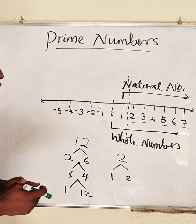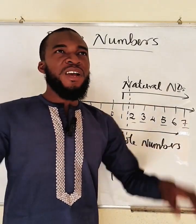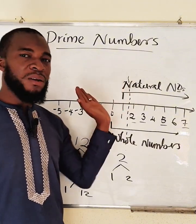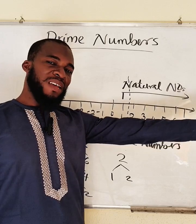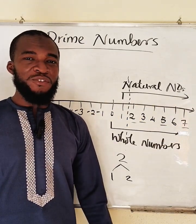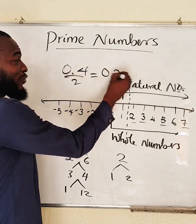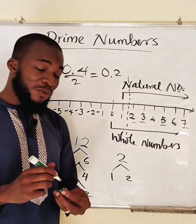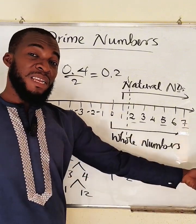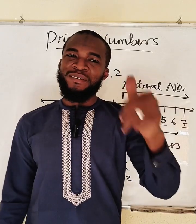I think I've explained what a prime number is. If you define it as 'any number' you are wrong; if you say it is an 'integer' you are wrong. It has to be a natural number or a whole number, and it has to be greater than one. Just like when defining an even number — you can't just say 'any number that can be divided by two,' because 0.4 divided by two gives 0.2 with no remainder. Can we say 0.4 is even? No. So you must say it is an integer. That's prime numbers for you.